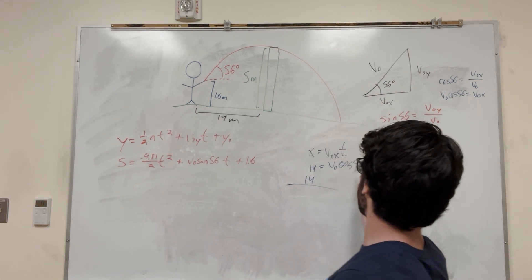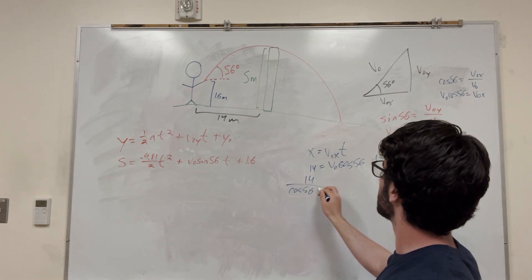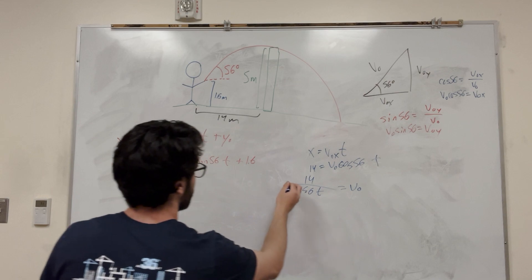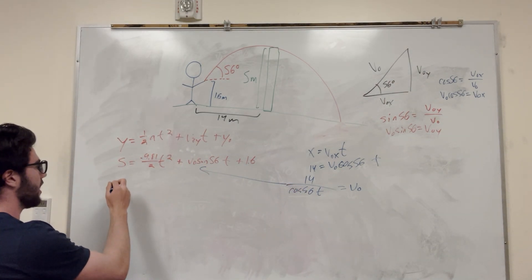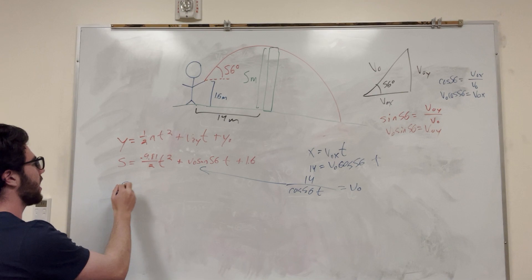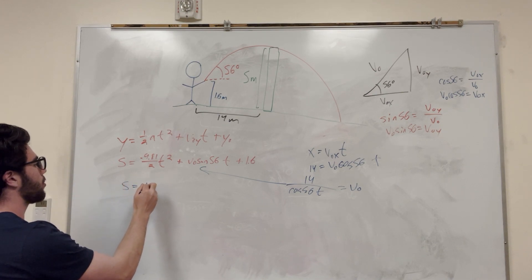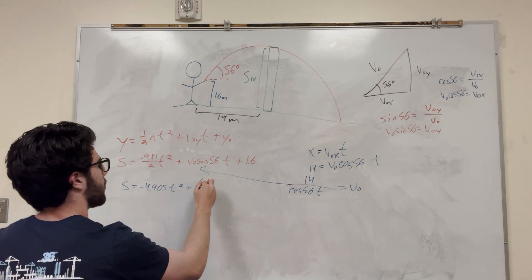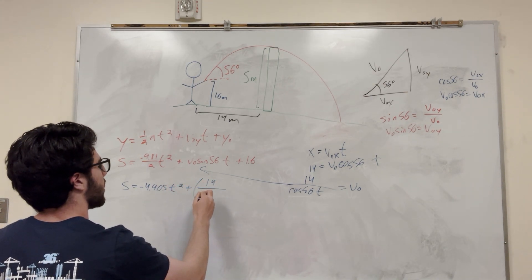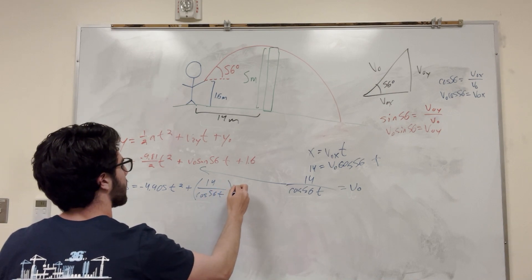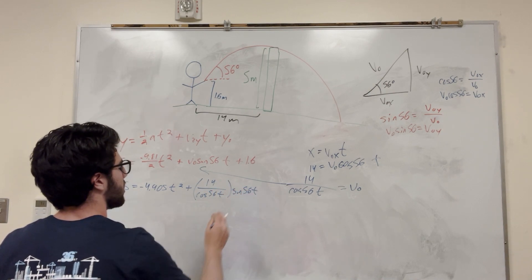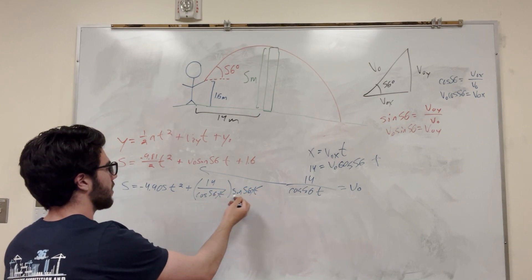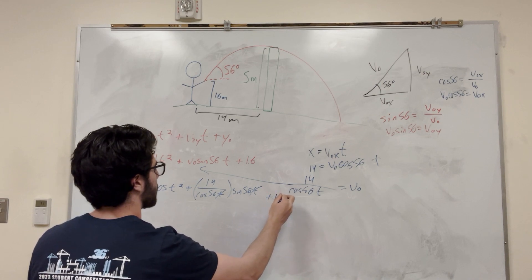So 14 divided by cosine of 56 times t is equal to v-naught. Now all I have to do is substitute this v-naught right into the y equation. What you're going to get is: 5 is equal to negative 4.905 t squared, plus 14 over cosine of 56 times t, times sine of 56 times t. These t's are going to cancel, and then sine over cosine is tangent. And then this is plus 1.6.